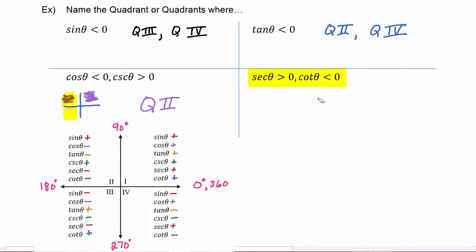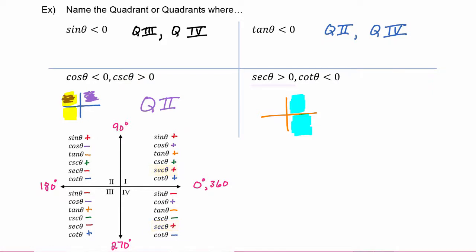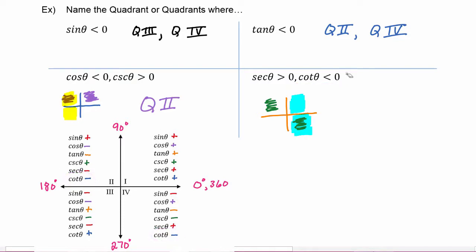In the fourth example, secant theta must be positive, which happens whenever the x coordinate is positive — in quadrant one and quadrant four. Additionally, cotangent theta must be negative, which occurs whenever x and y have opposite signs — in quadrant two and quadrant four. Both conditions are satisfied only in quadrant four.